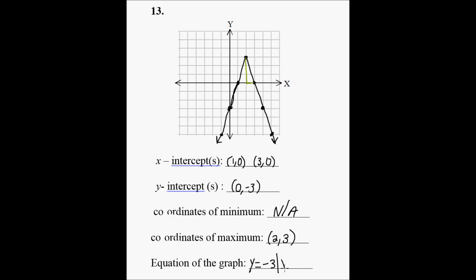Open absolute value, x, and then we need the opposite of the x-component of the vertex, so the opposite of positive 2 is minus 2. Close absolute value, plus 3. And that's how you answer number 13.